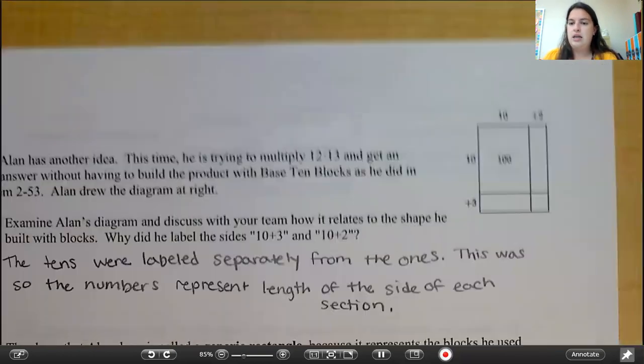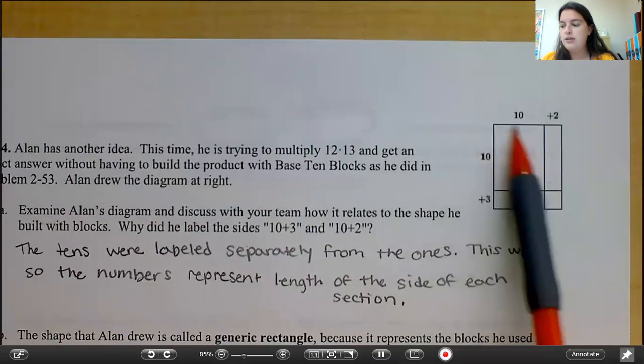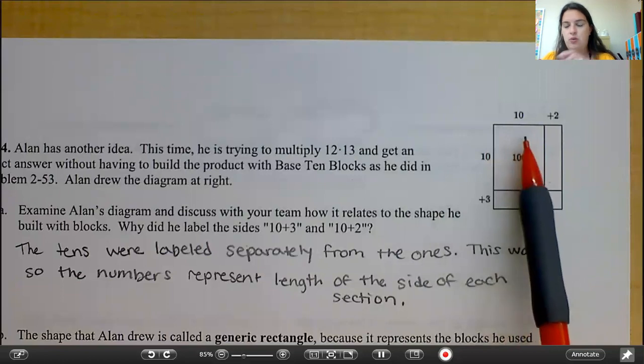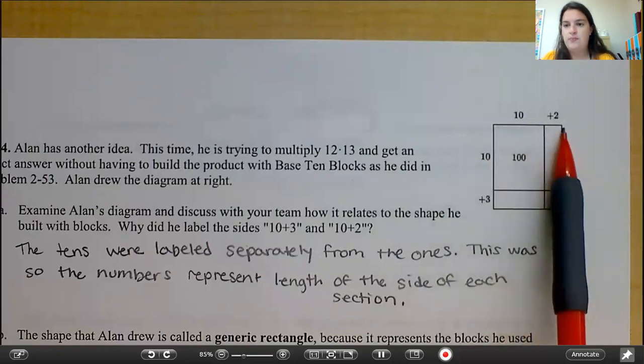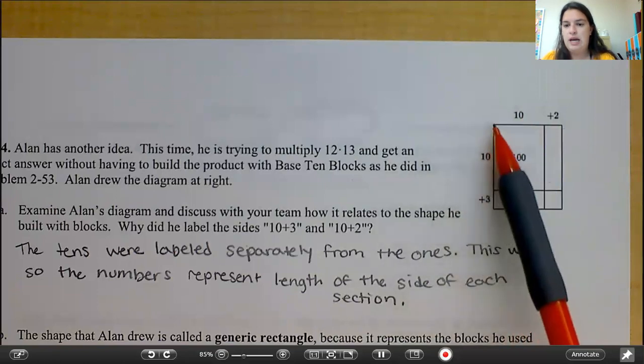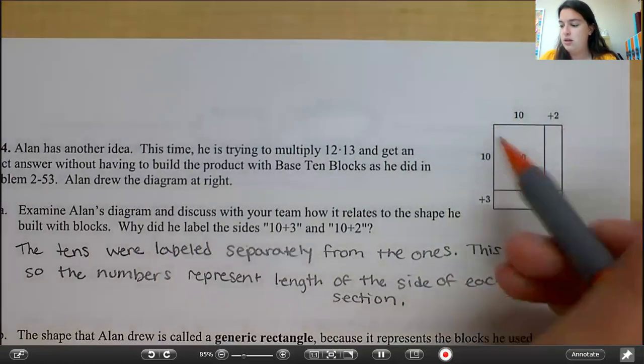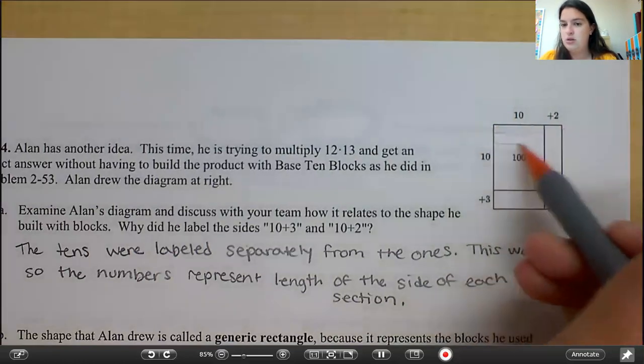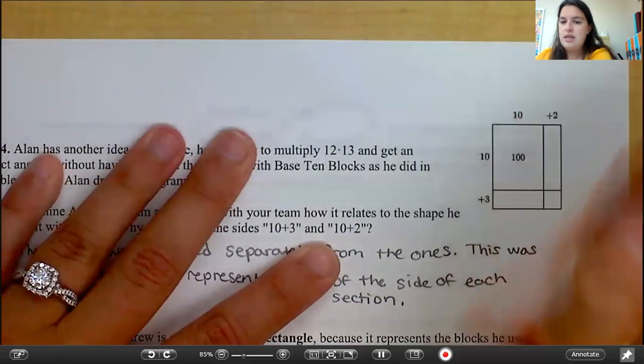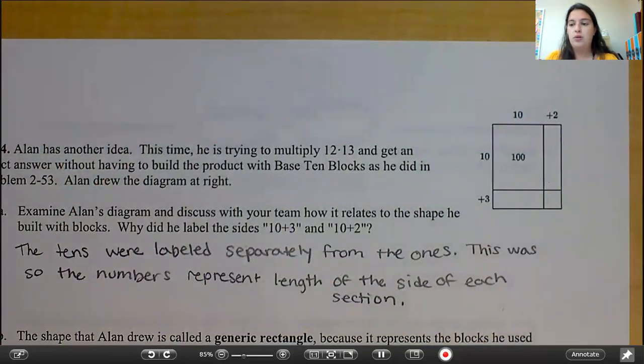So what that's saying is if we would have done base 10 blocks, we would have had one 10 block here, which are those long ones, and then two individuals over here. Down here we would have had 10 of those 10 blocks because they're going across this way, they'd be going across this way just like I'm sketching, okay?